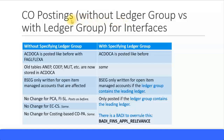Now let's look at how CO postings are done for interfaces — without specifying the ledger group and with specifying the ledger group. You may have different systems posting to Simple Finance, and I've divided this into two columns so you can easily differentiate. The first column is without specifying the ledger group, which is the normal case, and specifying the ledger group is the rare case.